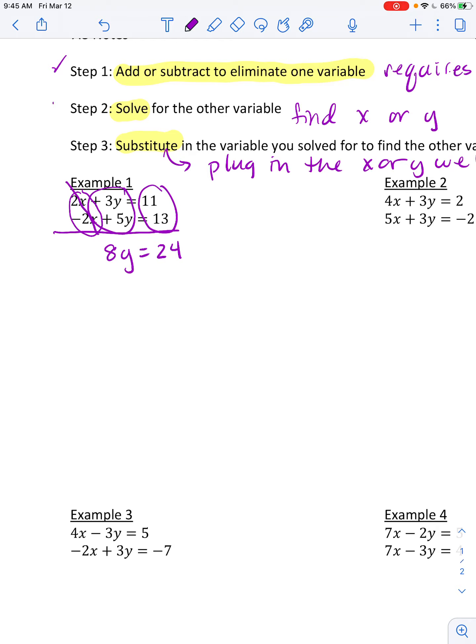Now I'm going to solve for the variable. So the only one I have is y. So to solve for y, I simply divide by 8. So now I know that y has a value of 3, keeping in mind that I am getting an x, y pair for my solutions.